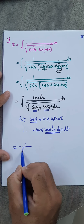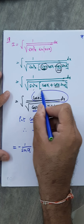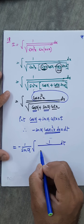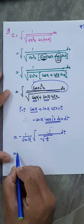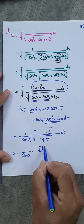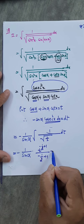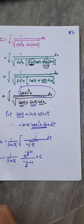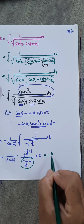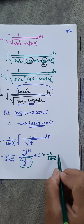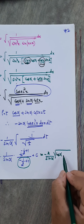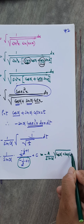The derivative of cot x is minus cosec²x, so differentiating: sin α times (−cosec²x) dx = dt. We need cosec²x dx, so (−1/sin α) times cosec²x dx = dt/sin α. This gives minus 1 upon sin α outside the integral of 1 over root t dt, which is t^(−1/2). Integrating: t^(1/2) divided by (1/2), giving 2 root t.